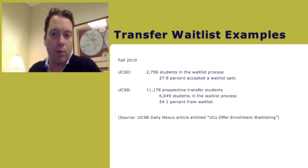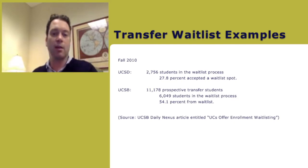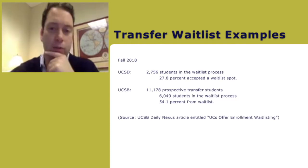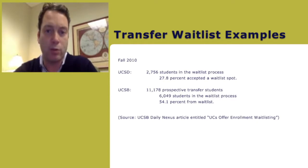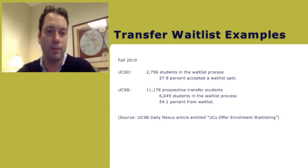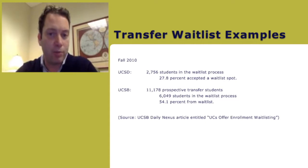So 54.1% — I'd love to verify that, it looks a little high — but the UCSD number is interesting because only 27% accepted a spot. Less than a third even went through the process of accepting. In UCSB's case, I believe 54% were accepted from the waitlist, with six thousand in that process.